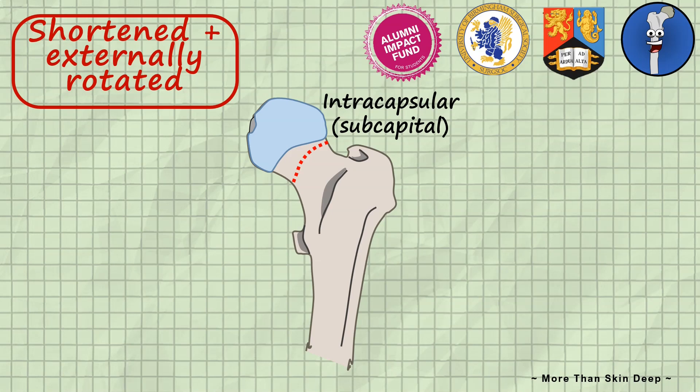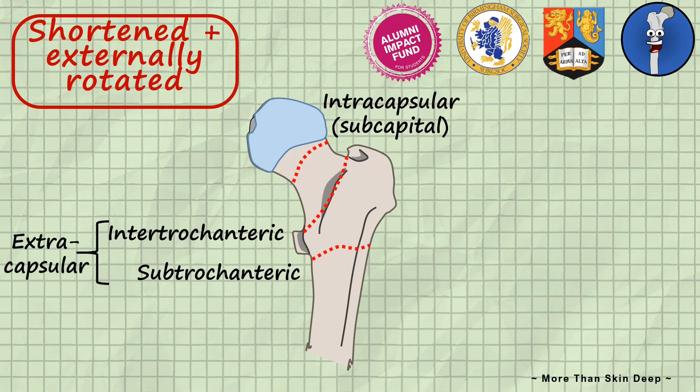The other two types are intertrochanteric breaks between the greater and lesser trochanter and subtrochanteric breaks below the levels of the trochanters. These two are both classified under the subheading of extracapsular fractures.